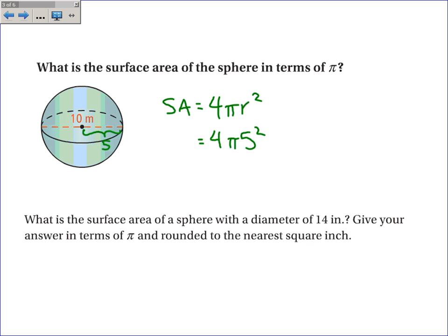Now, to leave it in terms of pi, we're going to forget about the pi for a second. So 4 times 5 squared is 100 pi meters squared. Okay, now again, this is a surface area, and area is always in square meters or square units.